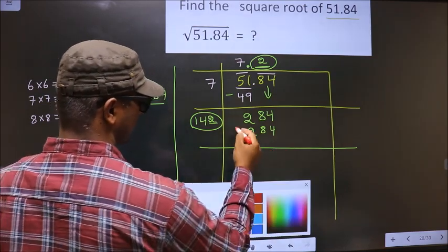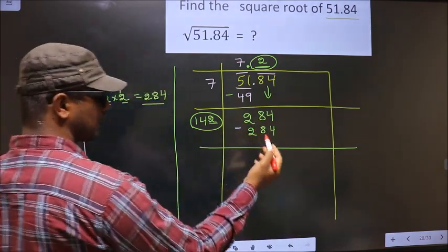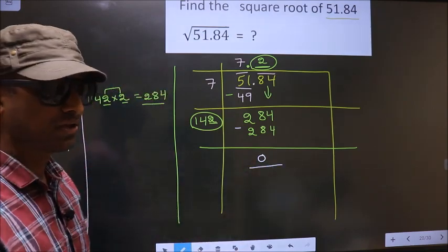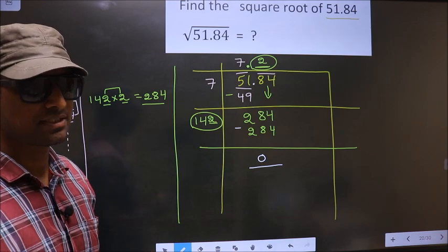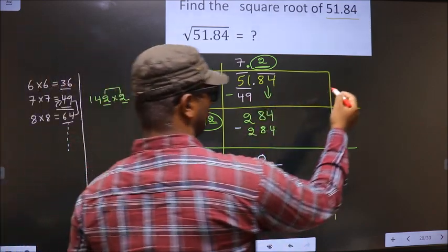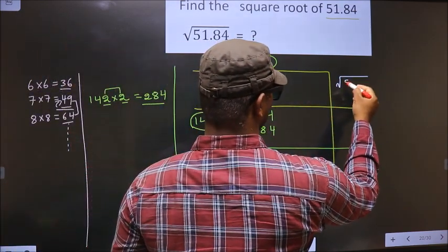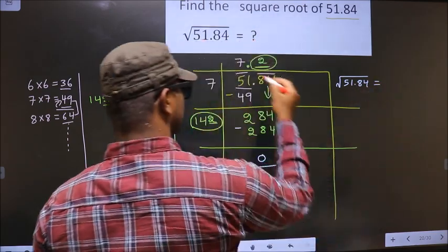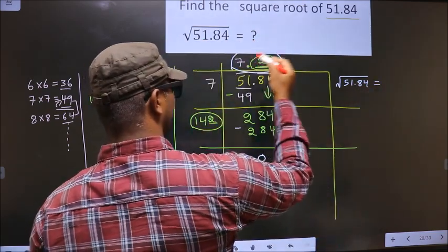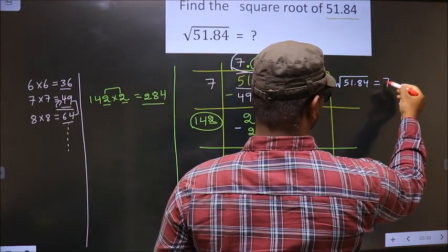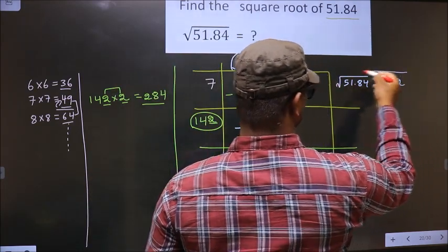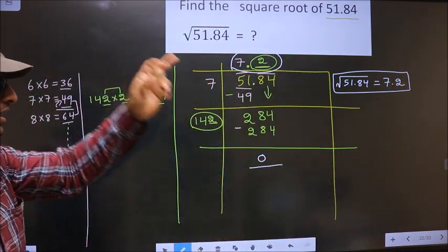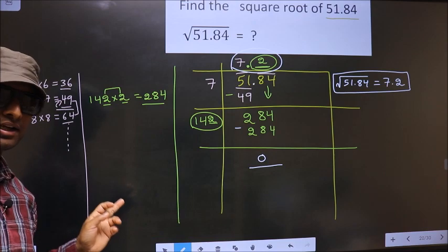Now you subtract. 284 minus 284 is 0. So we got 0 here. That means square root of 51.84 is this one. That is 7.2. So this is our answer. Am I clear?